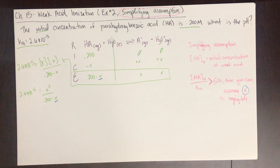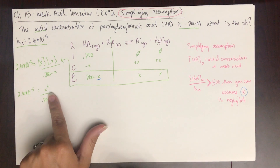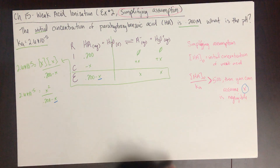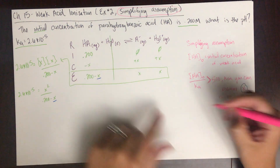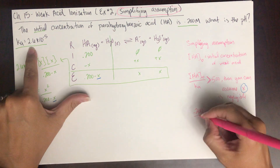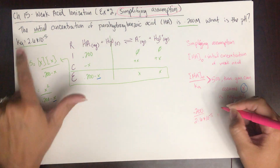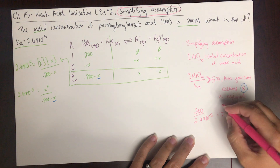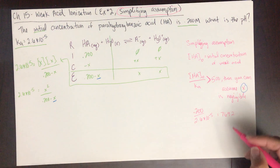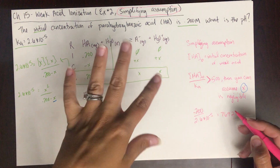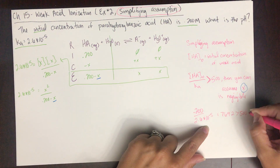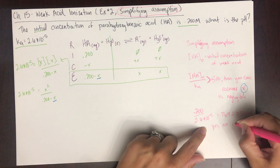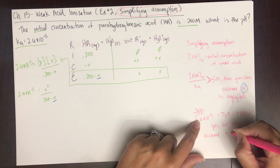If you love the quadratic formula and want to use it every time, you are welcome to — you will get the right answer. This is just a quick check to see if you can skip that step. So let's apply it: the initial concentration of the weak acid is 0.200, divided by the Ka, 2.6 × 10⁻⁵, equals 7,692. This number is greater than 500, so yes, we can assume X is negligible.